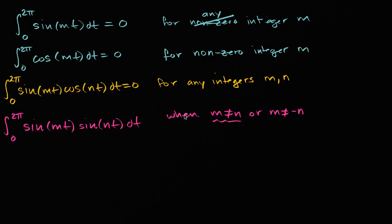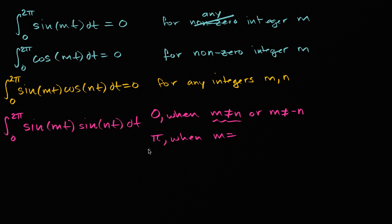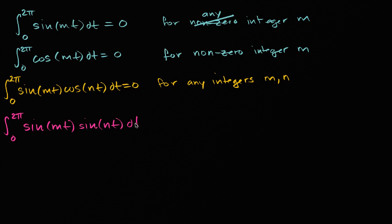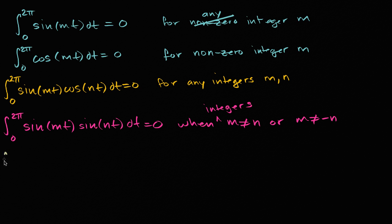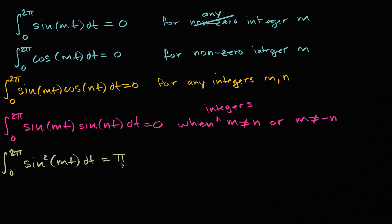This is going to be true for both cases. When m does not equal n or m does not equal negative n, this integral is going to be zero. And it's going to be equal to pi when m is equal to n. The integral from zero to two pi, when m is equal to n, we can write that as sine of mt times sine of mt, which is sine squared of mt dt. We're going to establish that this is going to be equal to pi.